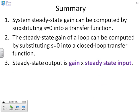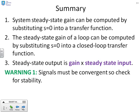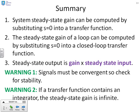In summary, the system's steady state gain is computed by substituting S equal to zero into the transfer function. The steady state gain of a loop is computed by substituting S equal to zero into the closed loop transfer function. The steady state output is simply the gain times the steady state input. Warnings: signals must be convergent, so check for stability first. And if a transfer function contains an integrator, the associated steady state gain is infinite.